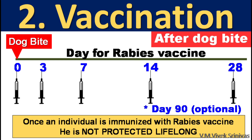Next, vaccination — that is active immunization. Anti-rabies vaccine is given at a dose of 1 ml intramuscular or 0.1 ml intradermal injection. The vaccination schedule is followed on day 0, 3rd day, 7th day, 14th day and 28th day. The 90th day vaccination is optional. Once an individual is immunized with rabies vaccine, that does not mean he is protected against rabies lifelong.